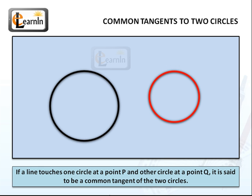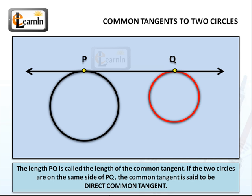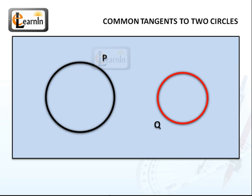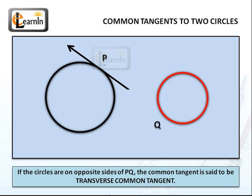Now let's look at the case where the circles don't touch at all. If a line touches one circle at a point P and another circle at another point Q, it's said to be a common tangent of the two circles. The length PQ is called the length of the common tangent. If the two circles are on the same side of PQ, the common tangent is said to be a direct common tangent. If the circles are on opposite sides of PQ, the common tangent is said to be transverse.